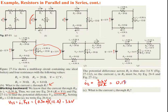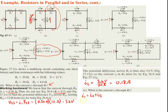The last part asks for current I3. We found I1 = 0.30 amps and I2 = 0.18 amps. Using the junction law at junction B, I1 is going into it and I2 and I3 are going out, so I1 = I2 + I3. Solving for I3: I3 = I1 minus I2 = 0.30 amps minus 0.18 amps = 0.12 amps.